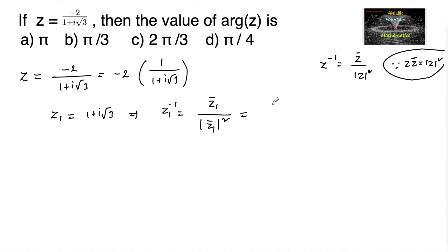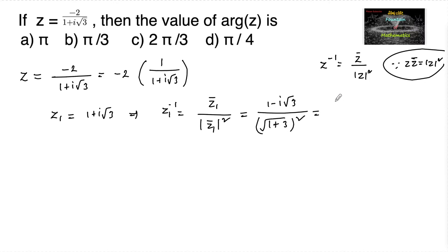Conjugate of z1 is 1 minus i root 3, upon mod z1 square, which is 1 squared plus root 3 squared, equal to 1 plus 3 equals 4. So this gives us 1 minus i root 3 upon 4.